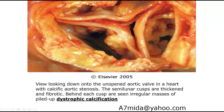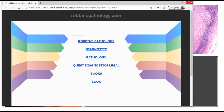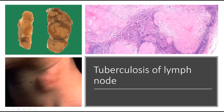This is an aortic valve. Here are the semilunar cusps. You can see the cusps are thick and fibrotic, with calcification — these irregular masses piled up are calcification. This is dystrophic calcification in the aortic valve. Here is a lymph node with tuberculosis — tuberculosis in a lymph node.